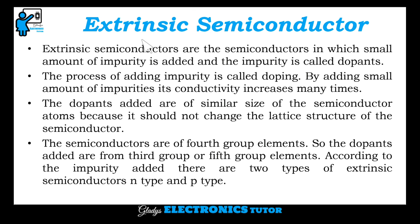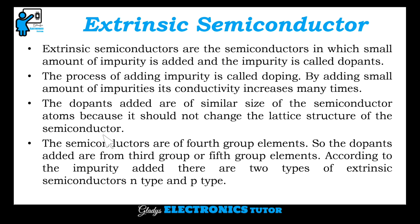Next, we will see about the extrinsic semiconductor. Extrinsic semiconductors are the semiconductors in which a small amount of impurity is added. The impurity is called dopants. The process of adding impurity is called doping. By adding small amount of impurities, its conductivity increases many times. The dopants added are of similar size to the semiconductor atoms because it should not change the lattice structure of the semiconductor.